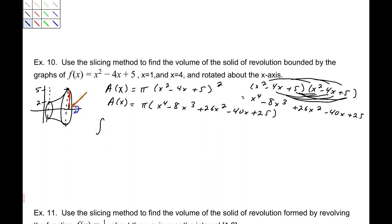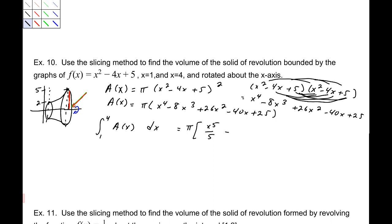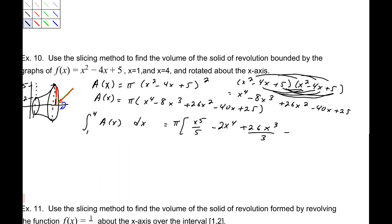I'm going to integrate this over the interval 1 to 4, since that's where my solid is. The antiderivative gives π times [x⁵/5 − 2x⁴ + 26x³/3 − 20x² + 25x], evaluated from 1 to 4. Plugging in the values of 4 and 1, and not forgetting the π, I get 78π/5 units cubed.